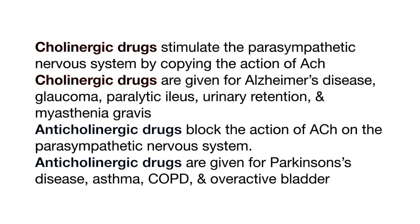Cholinergic drugs stimulate the parasympathetic nervous system by copying the action of acetylcholine. They are given for Alzheimer's disease, glaucoma, paralytic ileus, urinary retention, and myasthenia gravis. Anticholinergic drugs block the action of acetylcholine on the parasympathetic nervous system and are given for Parkinson's disease, asthma, COPD, and overactive bladder. Thank you for watching this video tutorial on cholinergic and anticholinergic drugs and their effects on the parasympathetic nervous system.